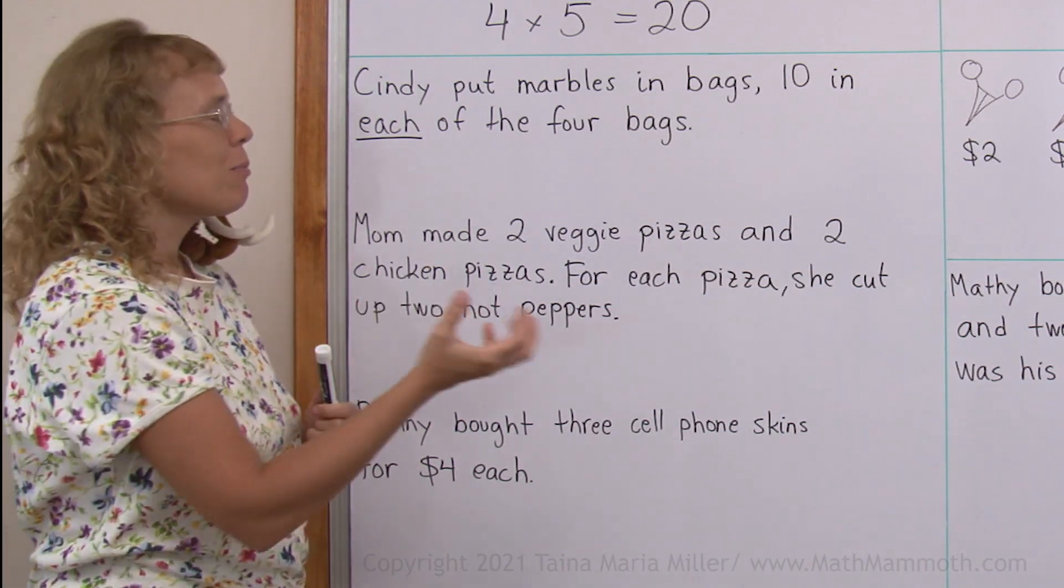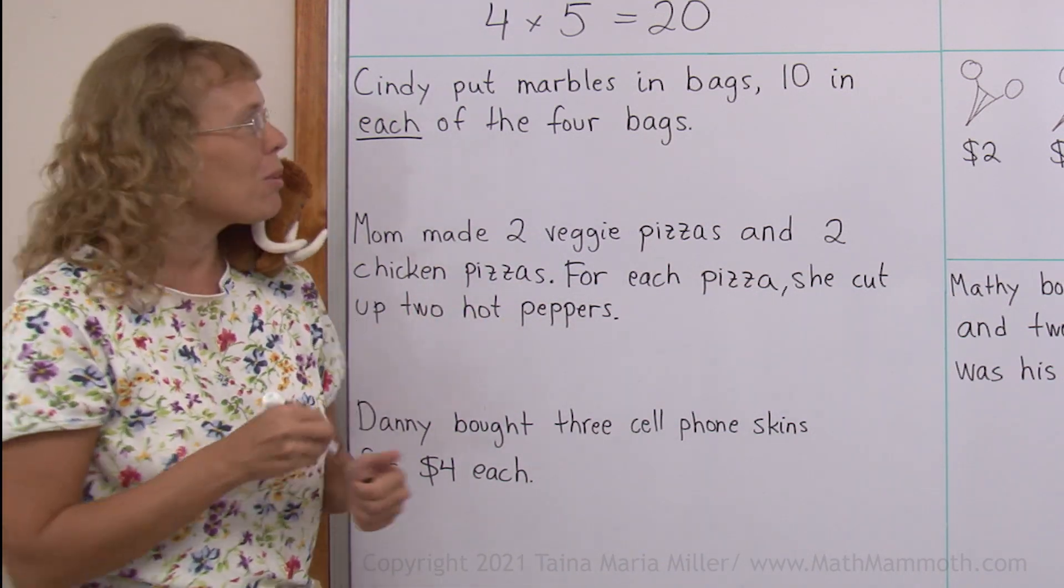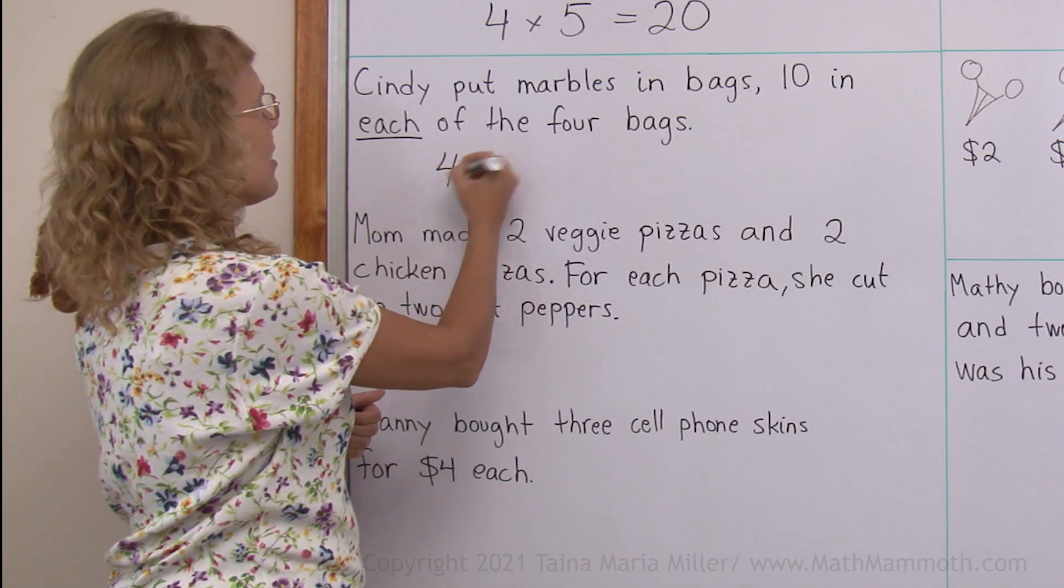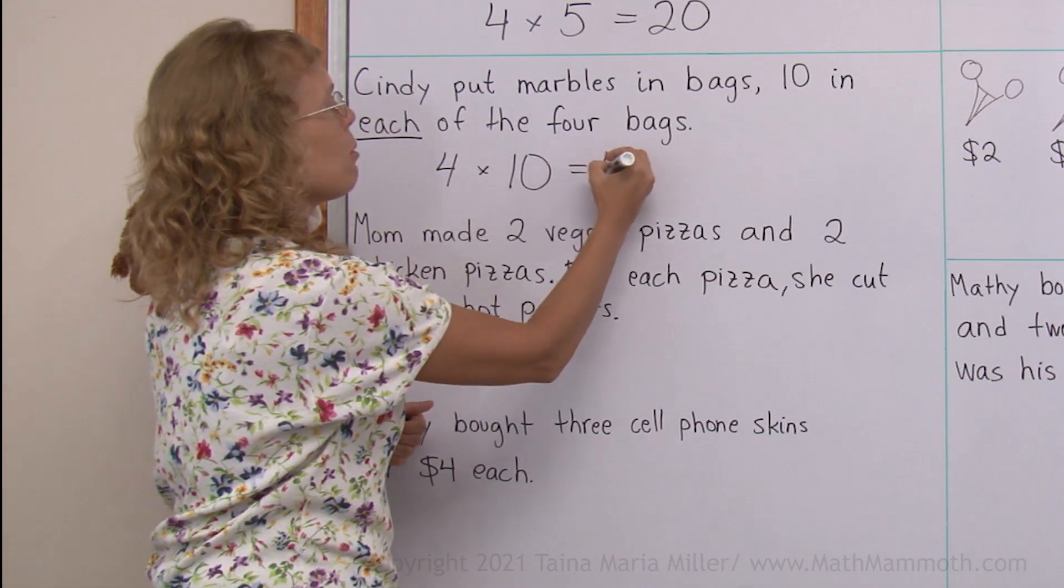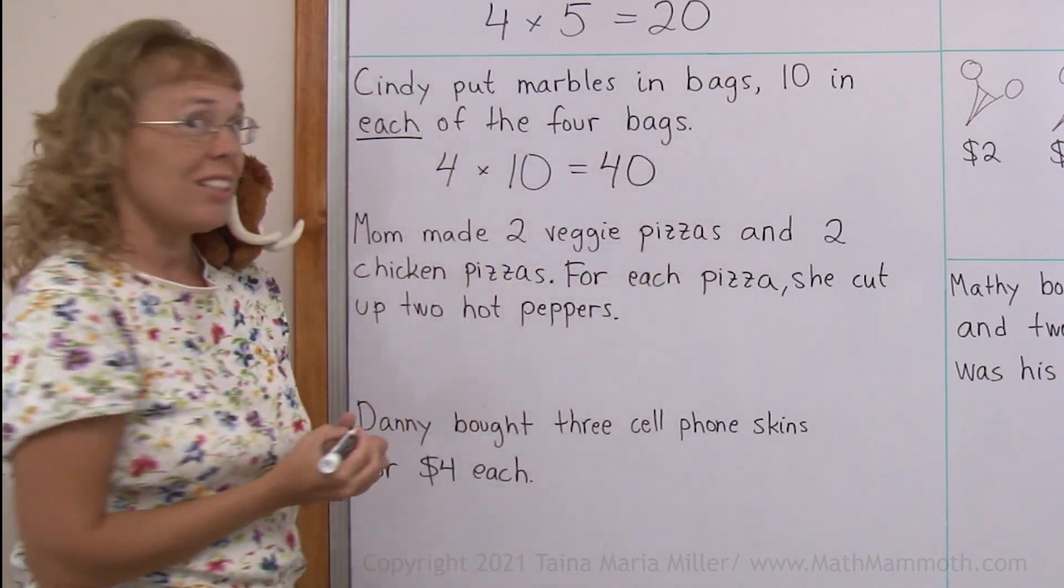So we can write the multiplication for the total number of marbles. We have four bags and then ten in each. So 4 × 10 = 40 marbles in total.